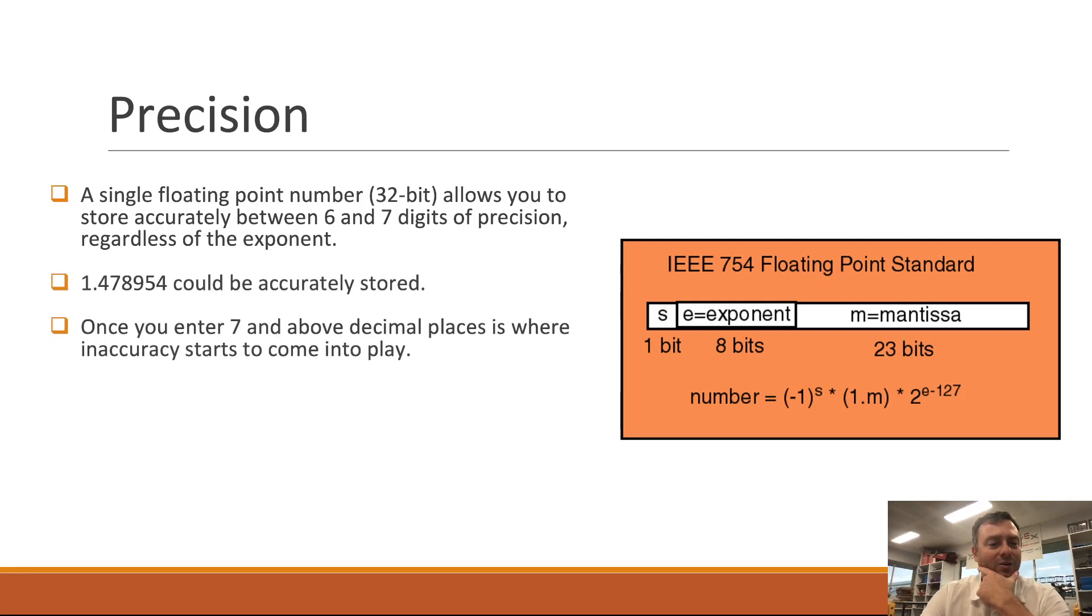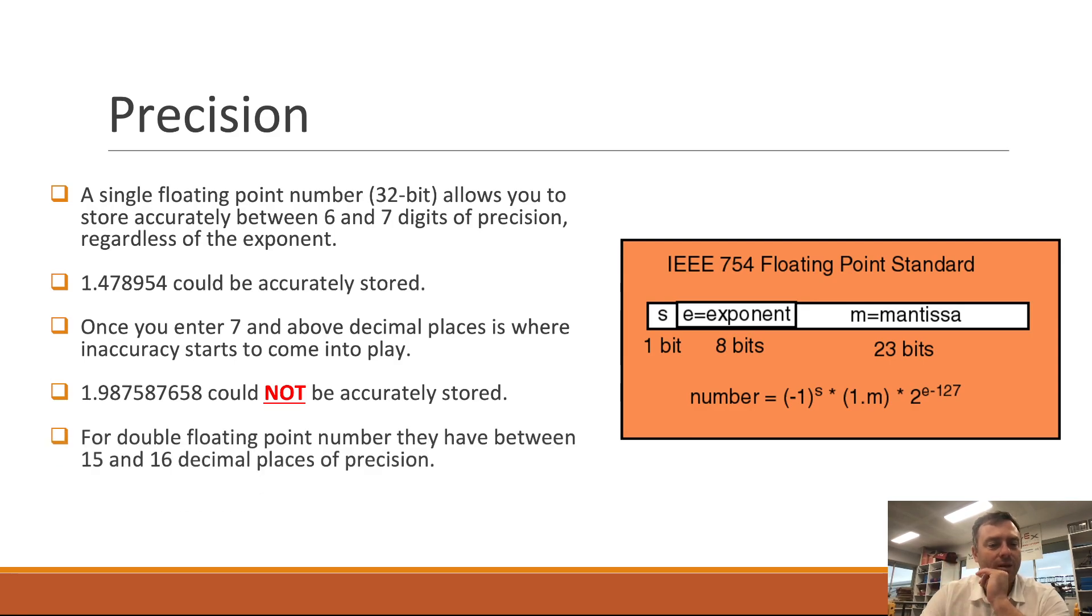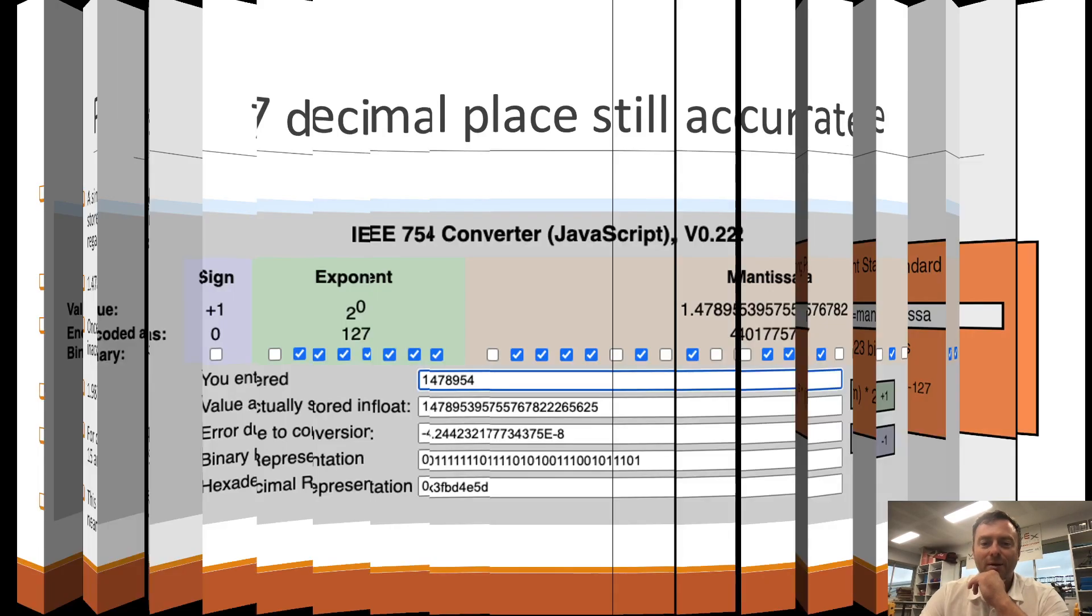So when we talk about precision it's only accurate to six to seven decimal points. Once you enter seven anything over that is not going to work. 1.987587658 will not be stored accurately, only stored to the seven decimal place. To fix that you can add more bytes. So instead of four bytes you're going to use eight bytes which gives you a 64-bit number or also known as a double and then that can be accurate to 15 to 16 decimal places. Cool.